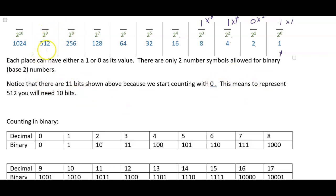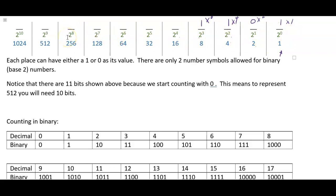To represent 256 you need 9 spaces, even though that's 2 to the 8th. With 9 bits you can represent numbers up to 256 + 128 + 64 + 32 + 16 + 8 + 4 + 2 + 1 = 511. Once all 9 spaces are filled with ones, to go one higher you need to add a bit — placing a 1 in the 512 position with the rest zeros.